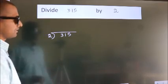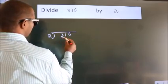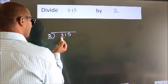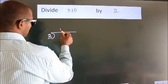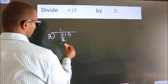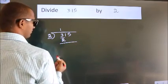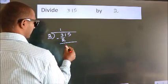Next, here we have 3, here 2. A number close to 3 in the 2 table is 2 times 1, which is 2. Now we subtract. We get 1.